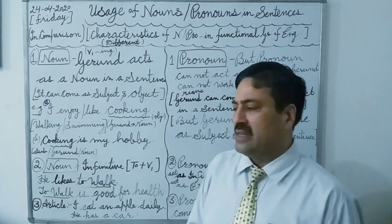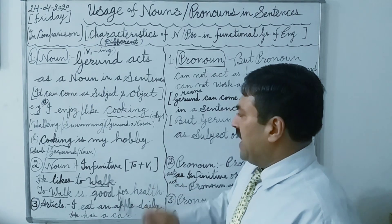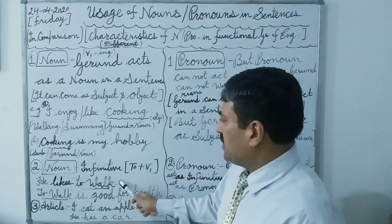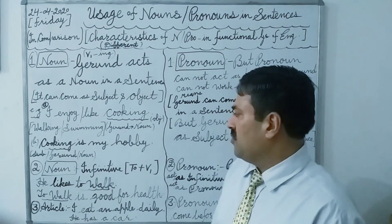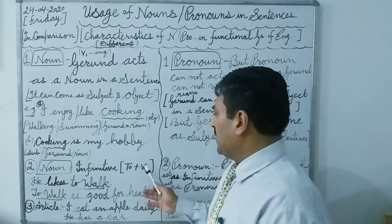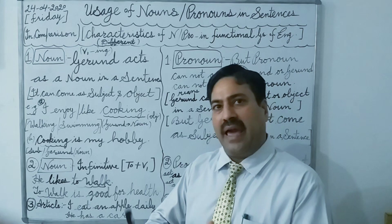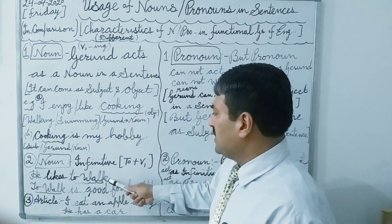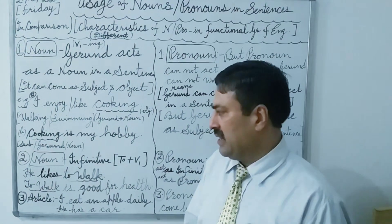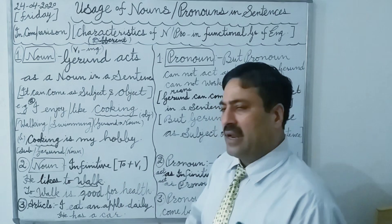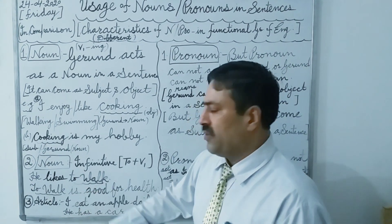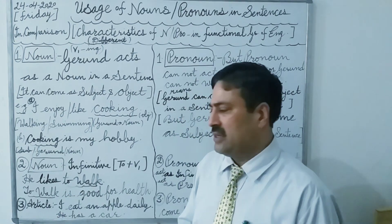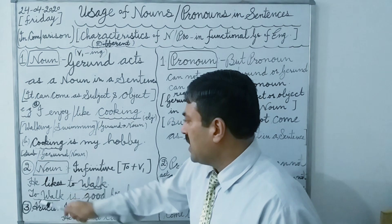In the second point, infinitive also acts as a noun — it can come as a subject or object in a sentence. What do we mean by infinitive? When 'to' plus the first form of a verb comes in a sentence, it acts as an infinitive. In the first example: he likes to walk — 'to walk' is the infinitive, coming as an object and also acting as a noun. In the second sentence: to walk is good for health — here it has come as a subject, so as a subject, infinitive has come as a noun.